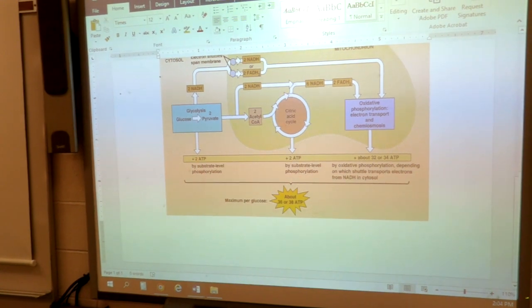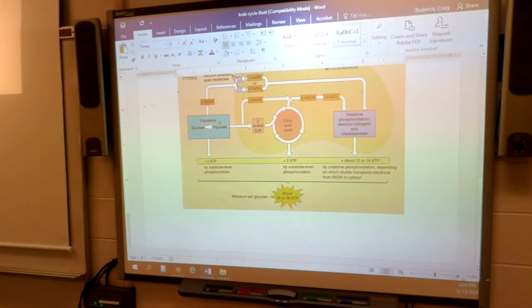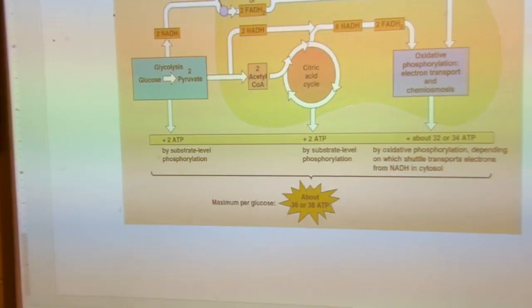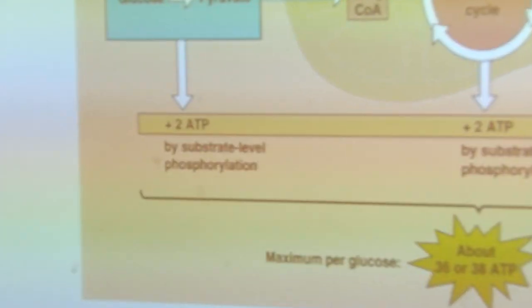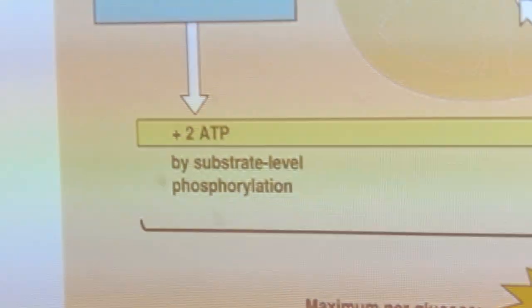All right, it stopped so I had to make a second video, part two. I want you to read, I'll be panning across the bottom. All right, so glycolysis produces 2 ATP.